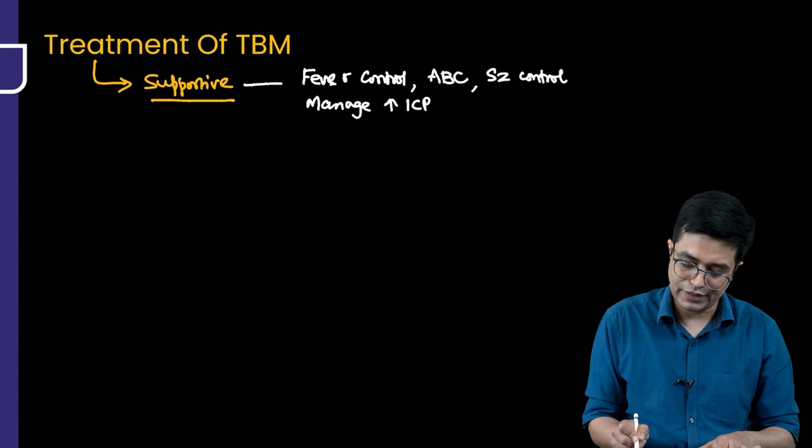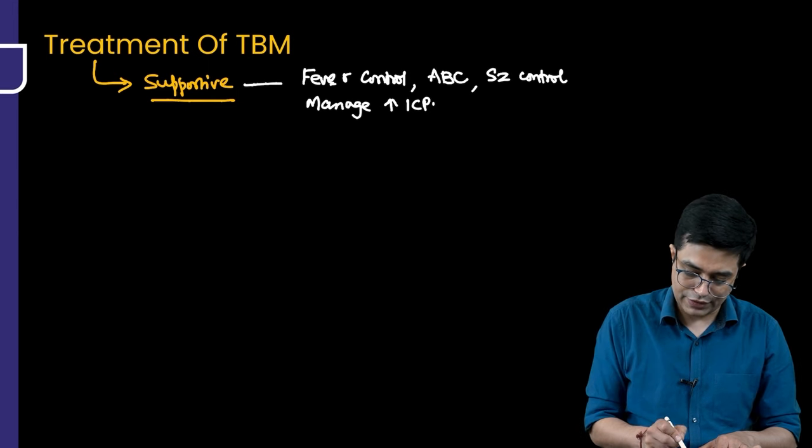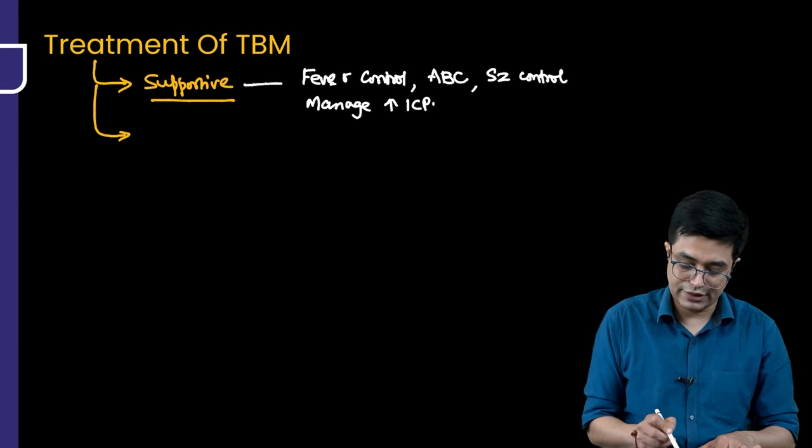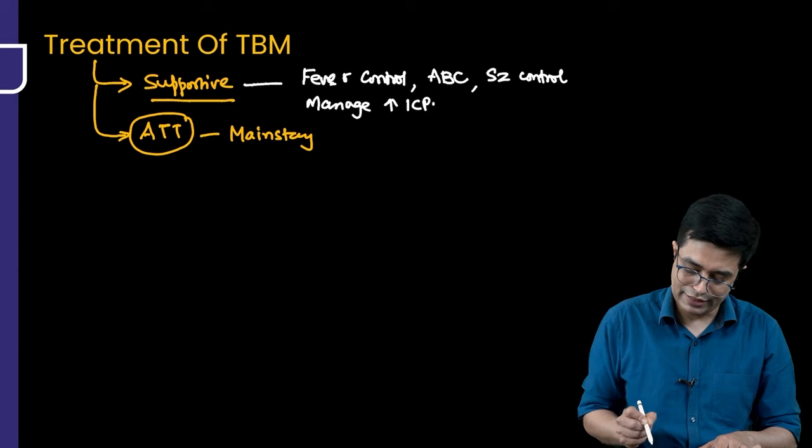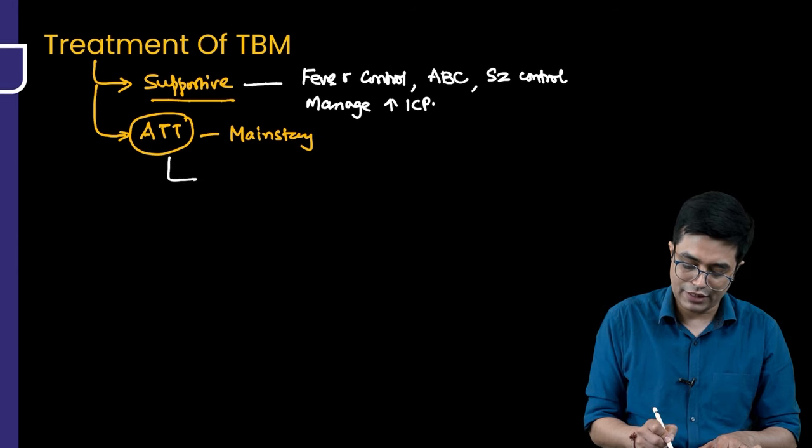The second part of treatment is anti-tubercular therapy (ATT), which is considered the mainstay of therapy. According to guidelines, we give two months of intensive therapy.